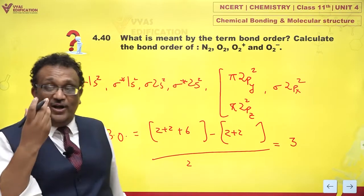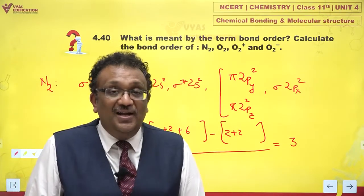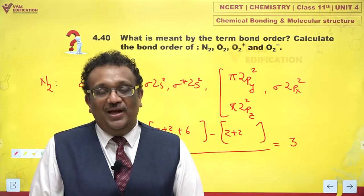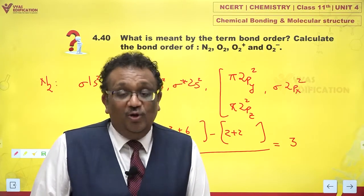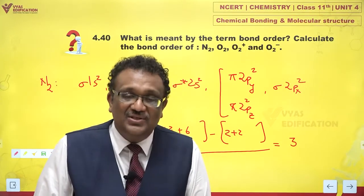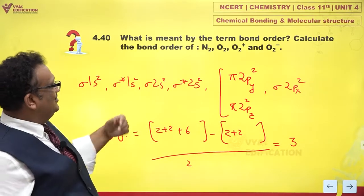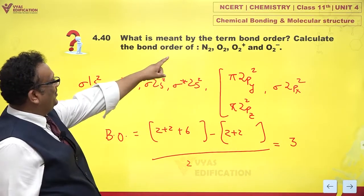The bond order of nitrogen is 3. Which means that N2 has a triple bond. And indeed, by valence bond theory also, we do see that N2 has a triple bond. It's consistent. This is the first part, N2.